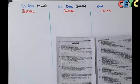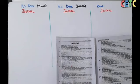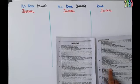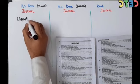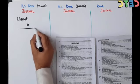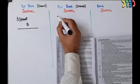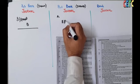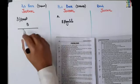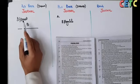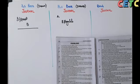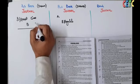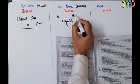तीनों parties की books बनानी हैं — पहले A (drawer), फिर B, और last में Bank। A ने B पर ₹15,000 का bill draw किया — A की book में Bills Receivable debit होगा और B का नाम credit। B की book में A का नाम debit और Bills Payable credit — यह reverse entry है। Amount ₹15,000 है।